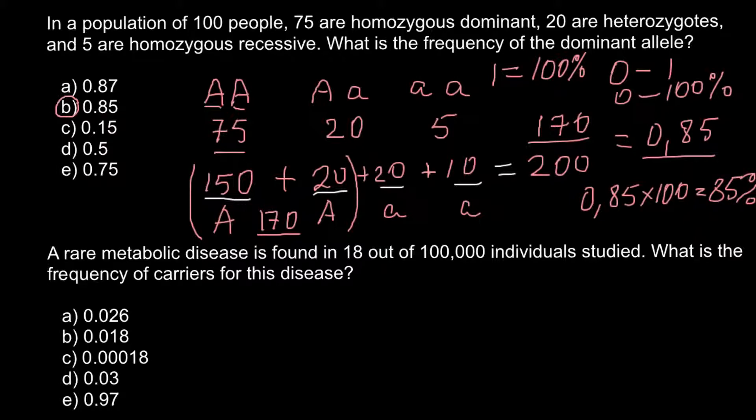And the next question is: a rare metabolic disease is found in 18 out of 100,000 individuals studied. What is the frequency of the carriers for this disease? And here's the five answers that you may choose from, and this is a very easy question so I hope everyone chose the correct answer.